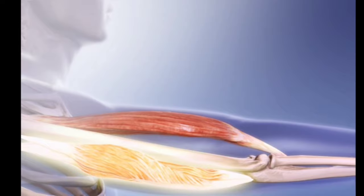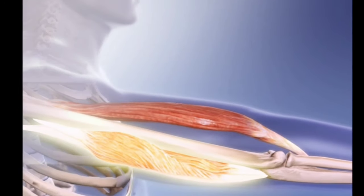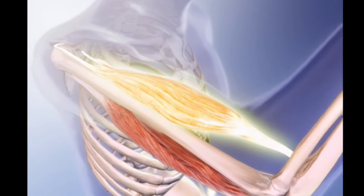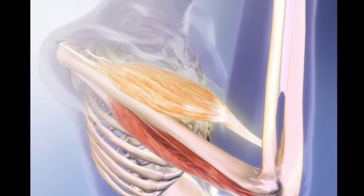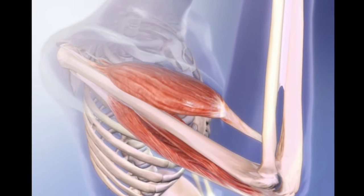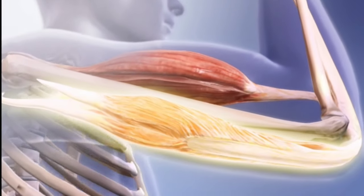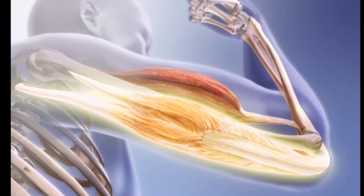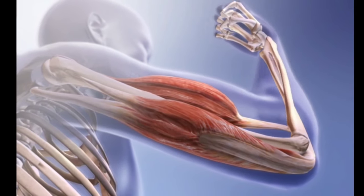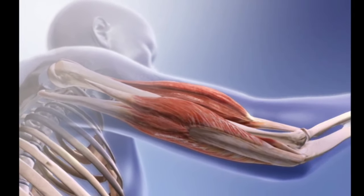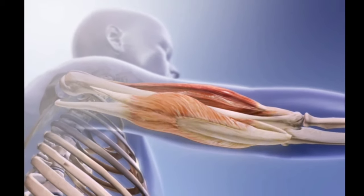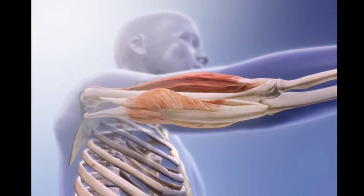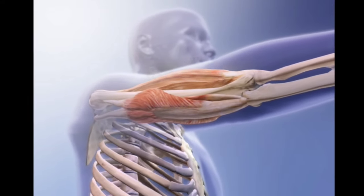Muscles that perform the paired and opposing action are called the antagonists. The agonists in elbow flexion are the muscles that contract to bring the elbow joint into a flexed position. The antagonists are the muscles that perform the opposite action: elbow extension. When the action of elbow extension occurs, the roles switch.